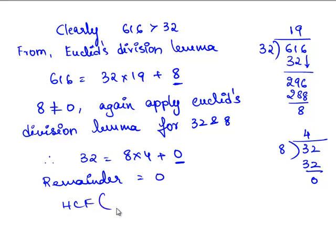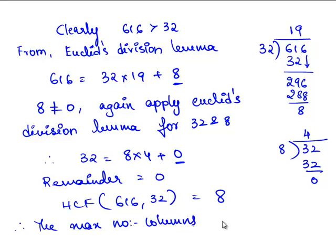HCF of 616 and 32 is equal to 8. Therefore, the maximum number of columns in which both groups can march is 8.